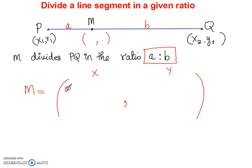You multiply A, which is this number, the first part of the ratio. A X2 plus B X1. Since this is the X coordinate, you will only have X coordinates in the first part. Divided by the total of the ratio A plus B.